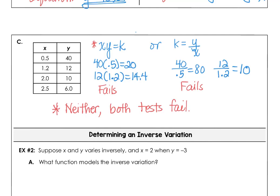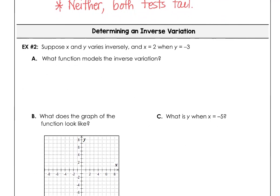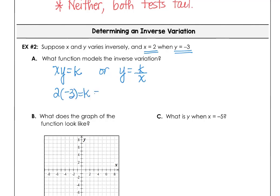In Example 2, x and y vary inversely, and x is 2 when y is negative 3. The inverse variation model is xy equals k. So k equals 2 times negative 3, which is negative 6. The equation is xy equals negative 6, or equivalently y equals negative 6 divided by x.